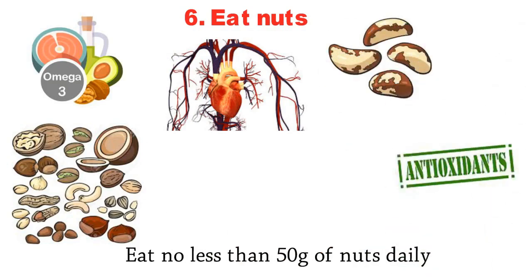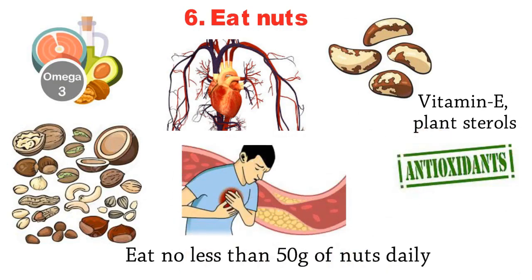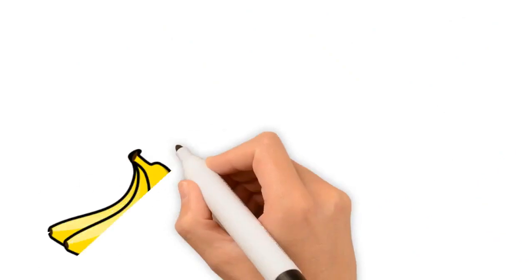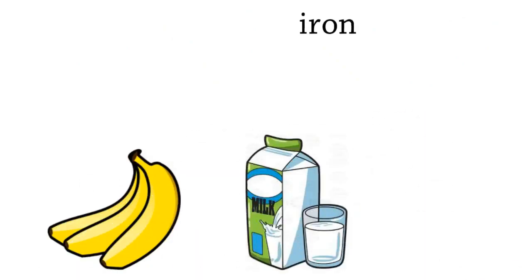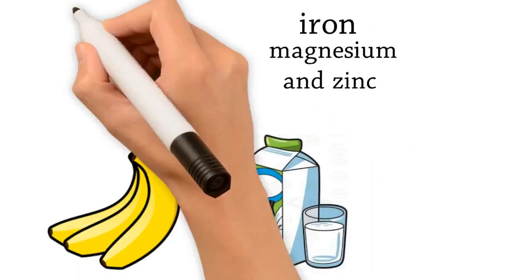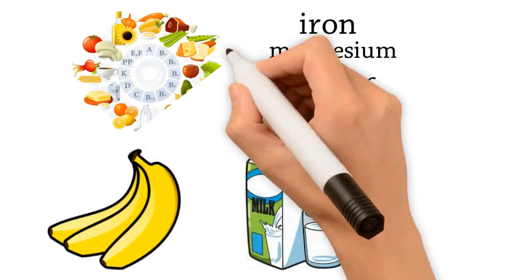vitamin E, plant sterols, substances that lower the level of harmful cholesterol, potassium, calcium, iron, magnesium, and zinc. In short, they are a storehouse of vitamins and nutrients.